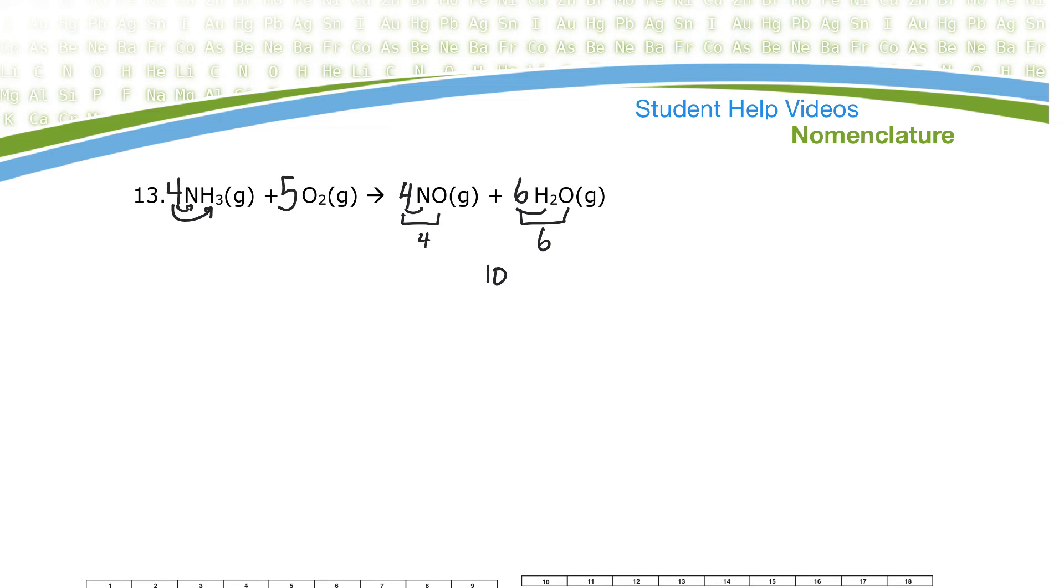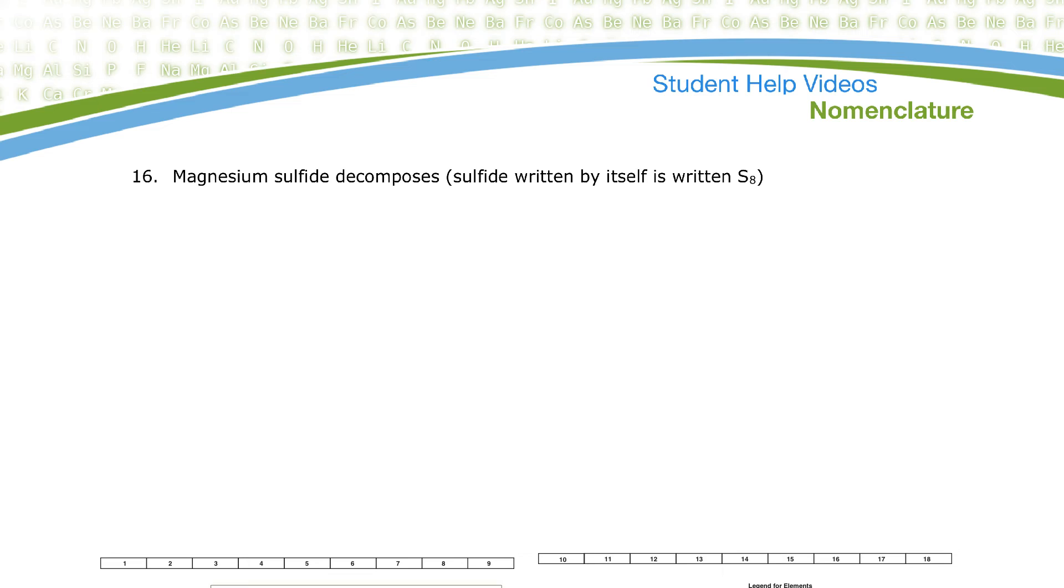Now, in terms of what type of reaction that is, it almost looked like a combustion kind of thing, eh? But there wasn't a carbon in it. I might just call that an other kind of reaction. And maybe there's a specific name for burning ammonia, but I'd probably just call it an other reaction.